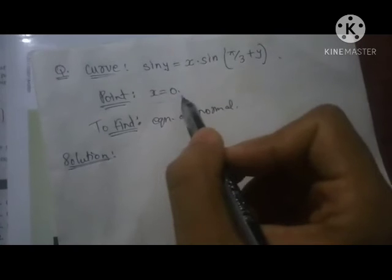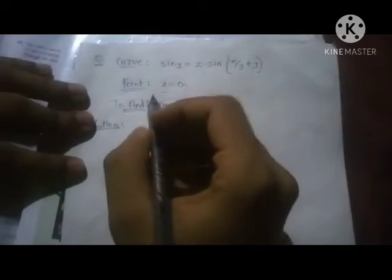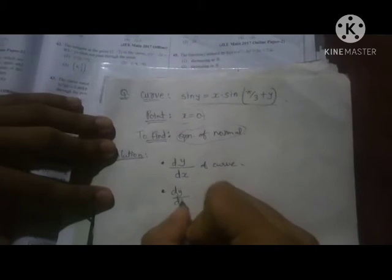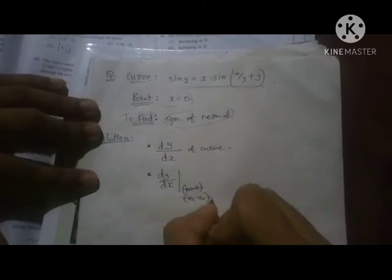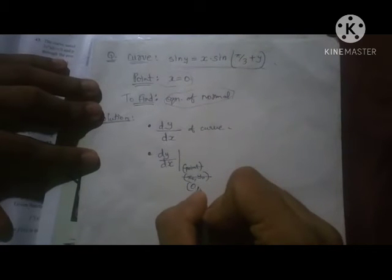This is the equation of a normal to the curve. Given this curve at this point, we want to find the normal. The key idea is d by dx.